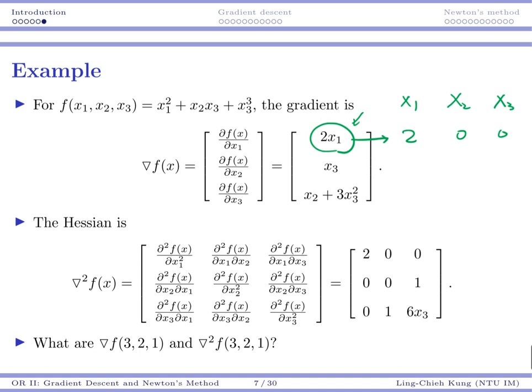For x3, if you do the same thing, you get 0, 0, and 1. For the last one, if you differentiate it with respect to x1, you get 0. For x2, you get 1. For x3, you get 6x3.